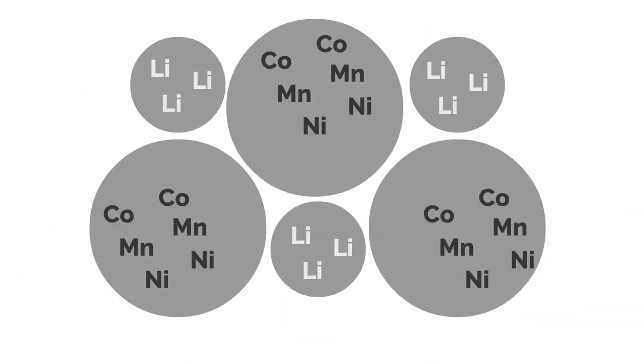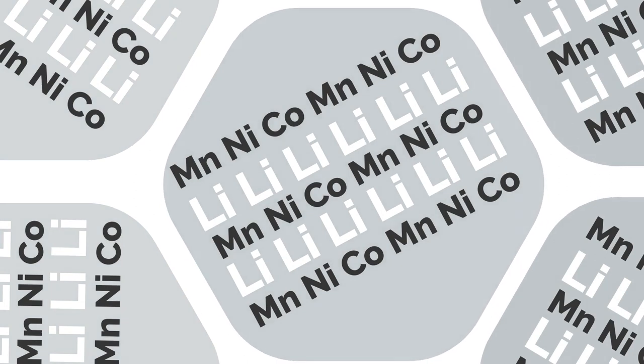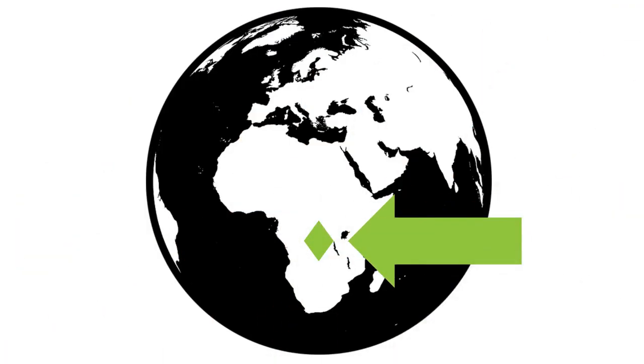Energy-dense cathode powders are made by baking lithium into large composite particles of energy metals, such as cobalt, nickel, and manganese. Most cobalt is found in the Congo, making it expensive and hard to get.